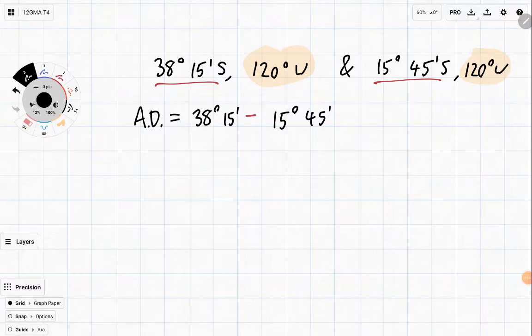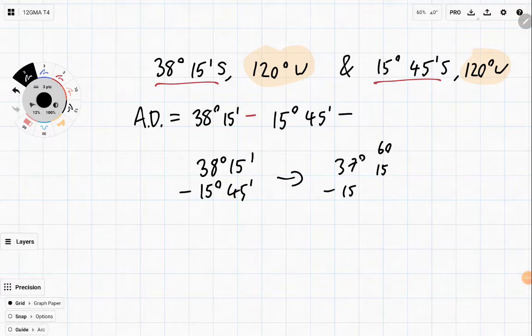Once again, I often find that to work this out, you can either use your calculator, or again, you can do vertical, subtract 15 degrees, 45 minutes. Problem, same problem we ran into last time, which is you can't take 45 off 15. So we need to make 15 bigger by trading one of these degrees into 60. So we get 37 degrees 60 and 15 minus 15 degrees, 45 minutes. So these two together make 75 minutes. 45 off 75 is 30. 15 off 37 is 22. And we get 22 degrees and 30 minutes.